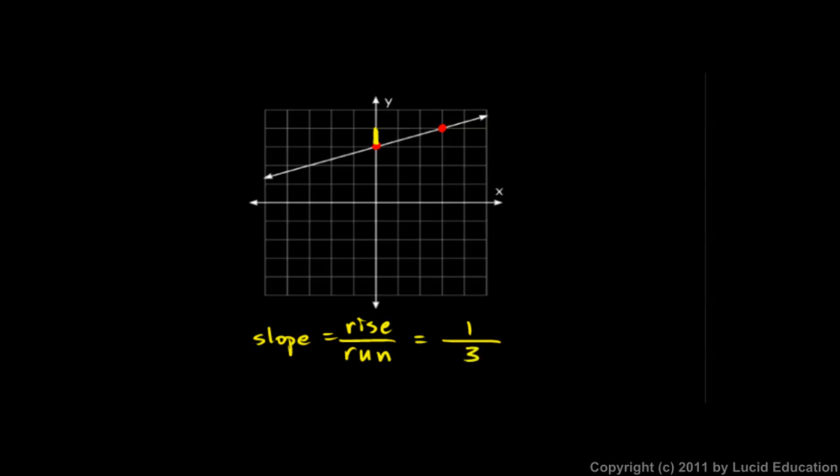And if I had instead drawn my little triangle down here, I would have a run of three and a rise of one. I would still have the same calculation. The slope, in this case, we say is one third. That's a number that tells us how steep the line is. So the slope is always calculated as rise over run. And a steeper line always corresponds to a larger number for the slope.